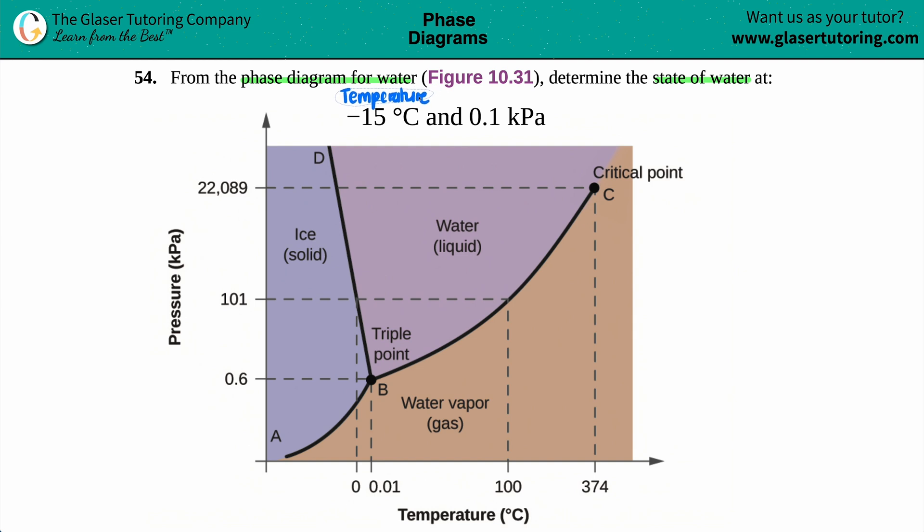So maybe I'll just grab this, put this over here. So this is your X coordinate, negative 15, and your pressure would be your Y coordinate. So if you wanted to think about it as a coordinate, we're looking for negative 15 comma 0.1.